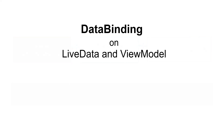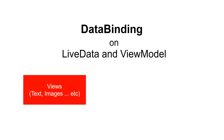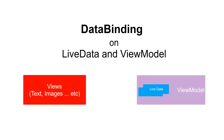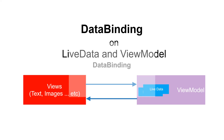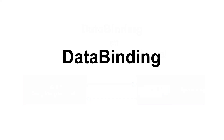To solve this problem we have data binding. Using data binding, views can directly communicate and update their data with the ViewModel and LiveData. Data binding connects two different layers — namely the XML layout and the ViewModel — without using the fragment.